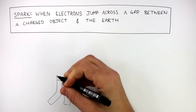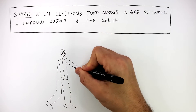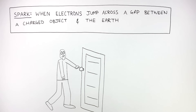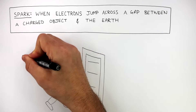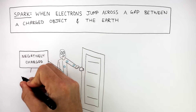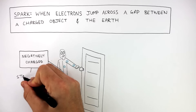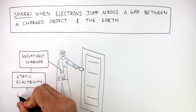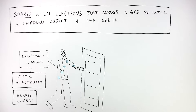Here we have a person who's reaching for a metal door handle to open the door, and we've all been in this position where all of a sudden we feel a spark. This happens because a negative charge builds up on your body, due to static electricity — this person now has an excess charge.